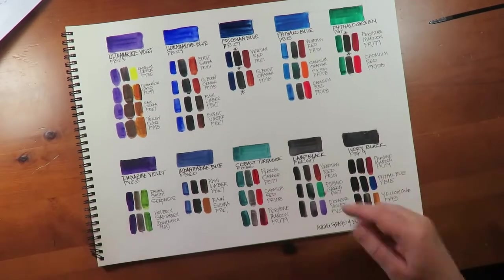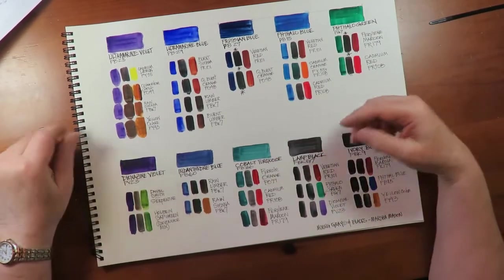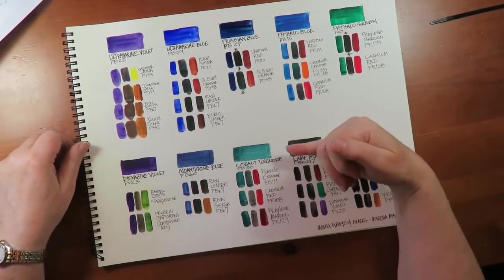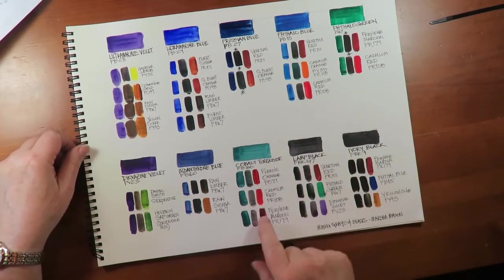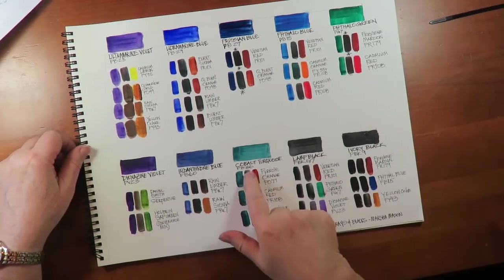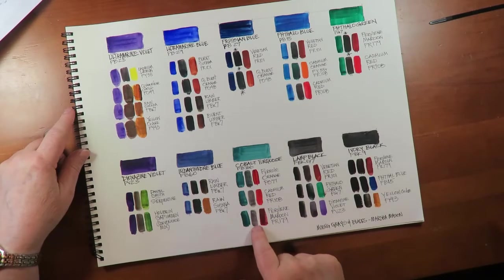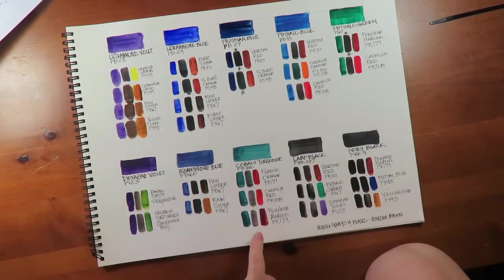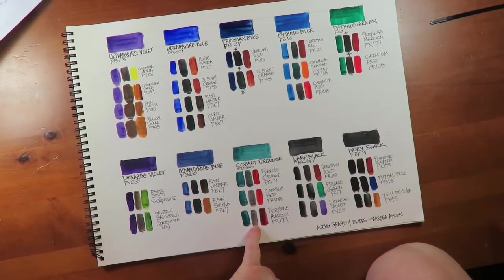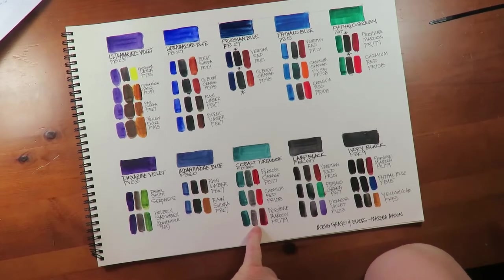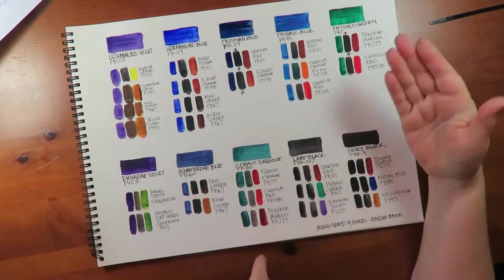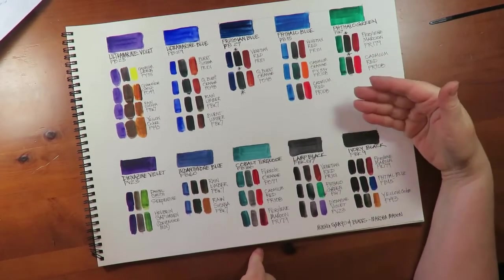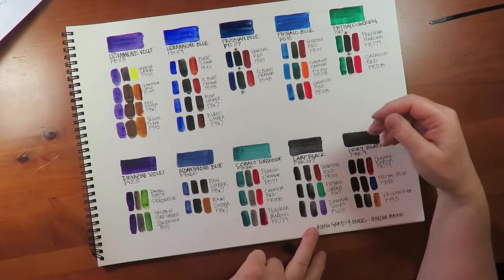And then I put down a color that I just picked up, brand new tube, haven't had it before, to see how I could get black with this. And it turns out, just like cobalt blue, you don't really get the darkest darks with it. So there really are some pigments that you can't get there from here.